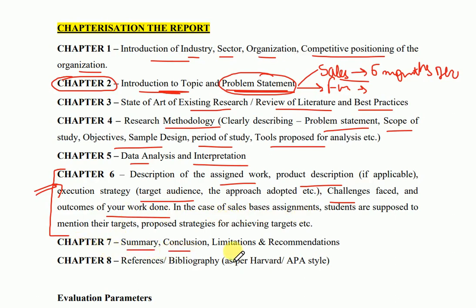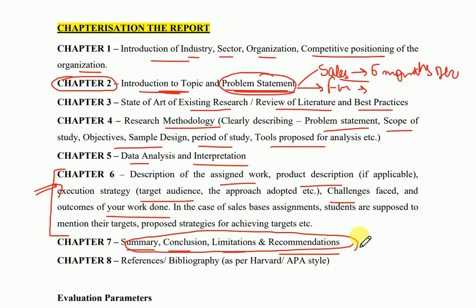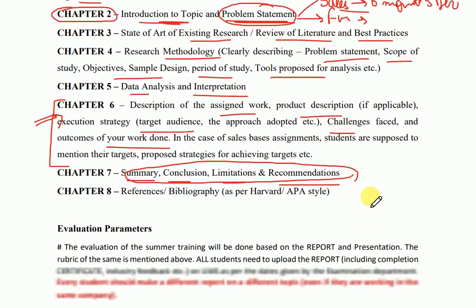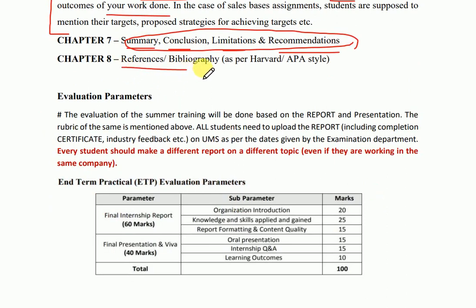Chapter 7 covers summary, conclusion, limitation, and recommendation — this should also include the outcome of your summer internship. You should think diligently and write properly about what the outcome of your summer internship was. Last but not the least, there are references and bibliography in Harvard and APA style; a reference for this document is also provided.